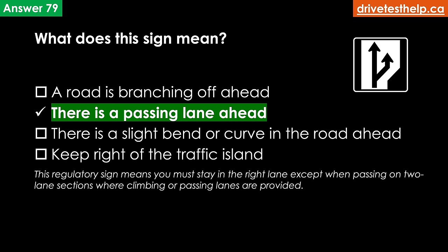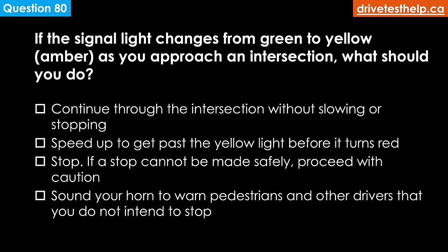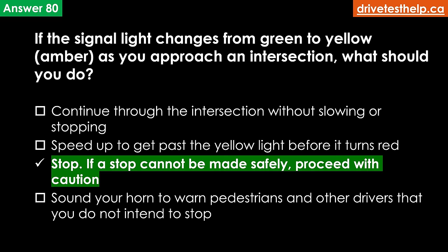If the signal light changes from green to yellow or amber as you approach an intersection, what should you do? Options: continue through the intersection without slowing or stopping; speed up to get past the yellow light before it turns red; stop — if a stop cannot be made safely, proceed with caution; sound your horn to warn pedestrians. The correct answer is stop — if a stop cannot be made safely, proceed with caution. Never speed up in an attempt to get past the yellow light before it turns red.